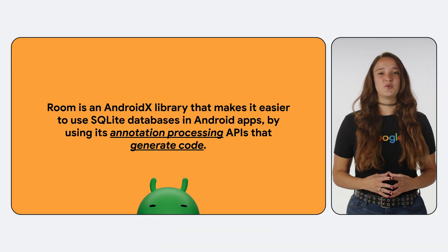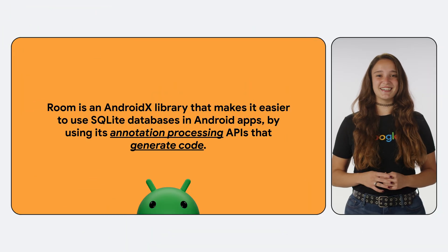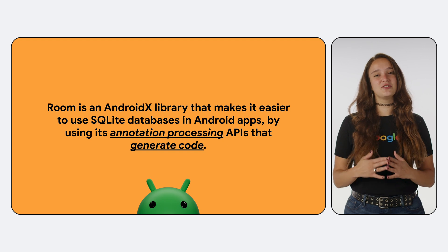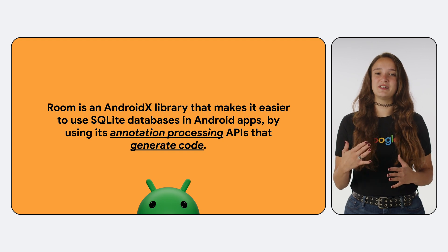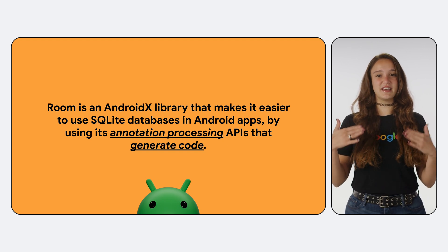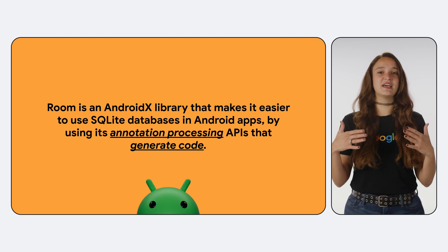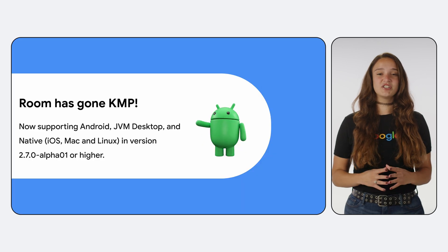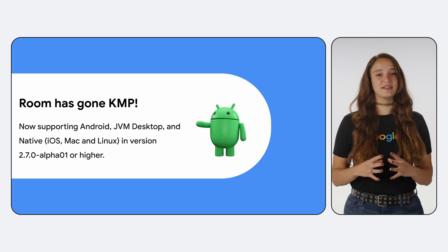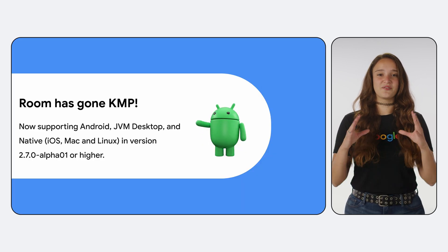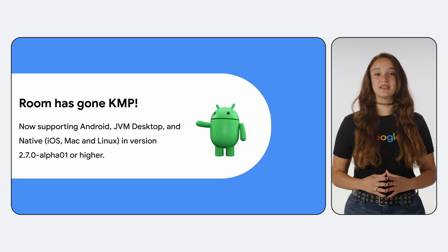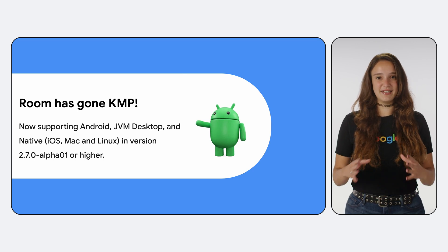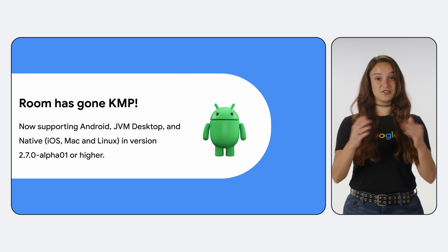If we're just getting started with Room, a little context: Room is an AndroidX library that makes it easier to use SQLite databases in apps by using its annotation processing APIs that generate code. Originally an Android-only library, we recently released the first Kotlin multi-platform version of Room, which supports JVM Desktop and Native, in addition to Android.